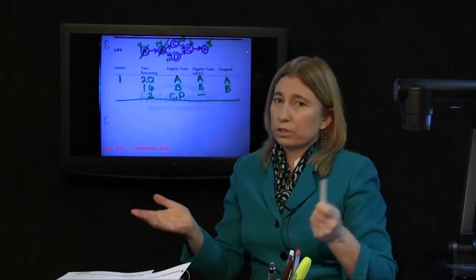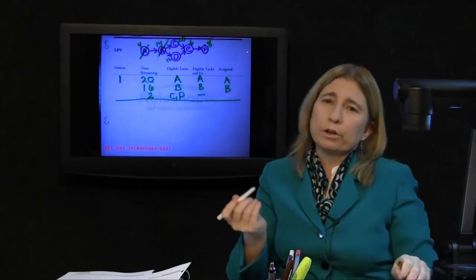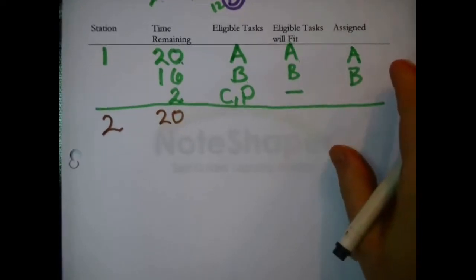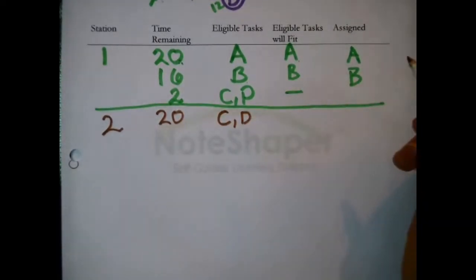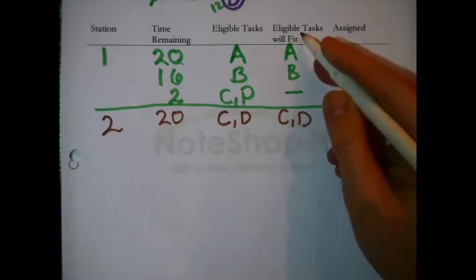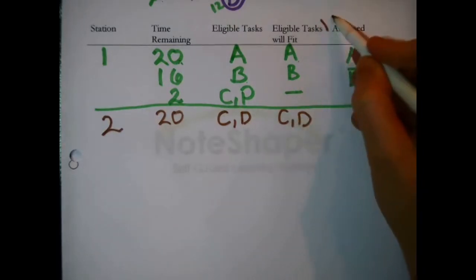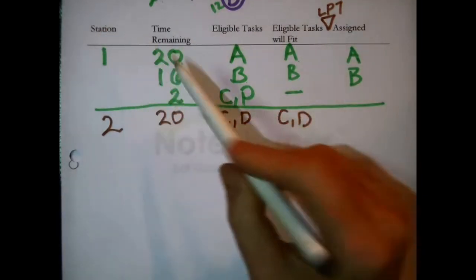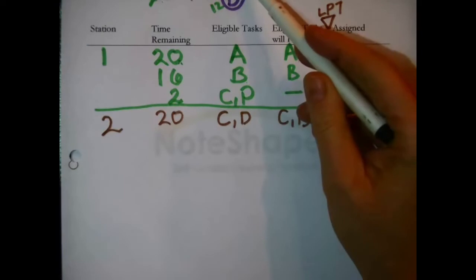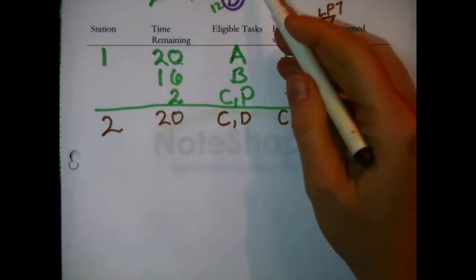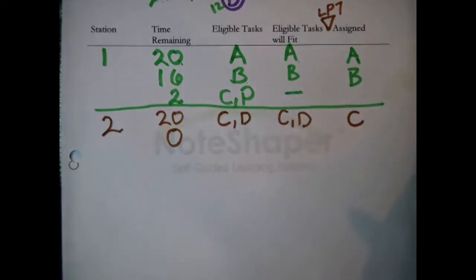When nothing eligible fits in the time remaining, you close that workstation and open another. At the second workstation we're back to the full 20 seconds. The candidates are C and D — both will fit. This is the first point where you have a real choice and your decision rule kicks in. We said we'd use longest processing time: C is 20 seconds and D is 12 seconds. C is longer, so C gets the assignment, using up the entire cycle time.